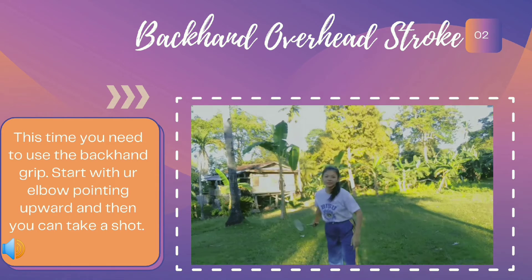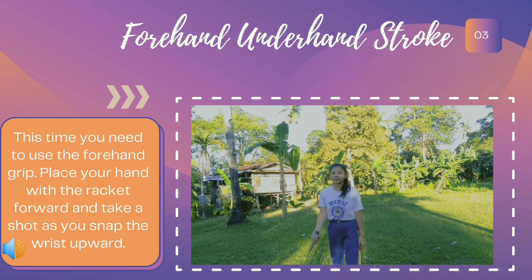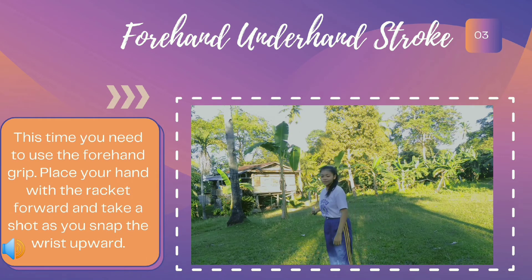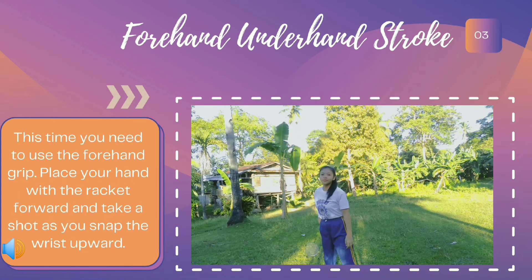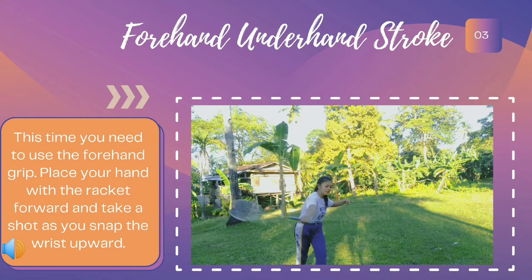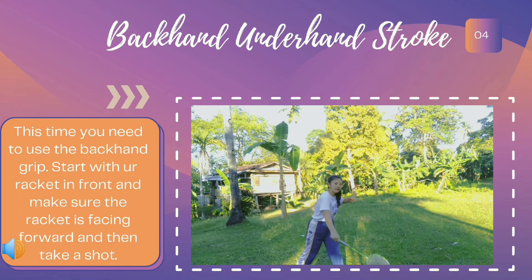Next we have the forehand underhand stroke. This time you need to use the forehand grip, place your hand with the racket forward, and take a shot as you snap the wrist upward. This is how you do the forehand underhand stroke.